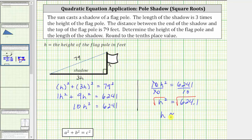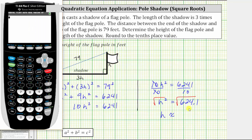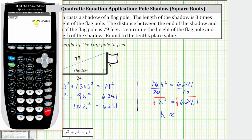So h is approximately — and we are asked to round to the tenths place value, or one decimal place — so we go to the calculator. We enter the square root of 624.1 by pressing second, x squared for the square root, then entering 624.1 and pressing enter. Notice there is a 9 in the tenths place value, and the digit to the right is an 8, which means we round up. This rounds to 25.0 to the nearest tenth.